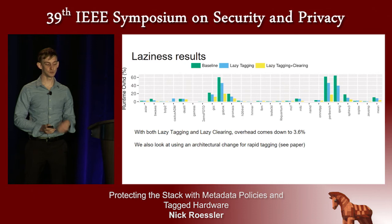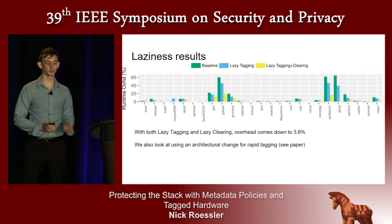There's one more optimization we look at in the paper: adding a new instruction to the architecture that allows it to tag or clear a whole cache line at a time instead of just one word at a time. This doesn't asymptotically change anything, but it gives about a constant 8x speedup. This is an alternative to the lazy policies, or it can be combined with lazy tagging. Those details and results are in the paper.